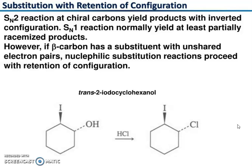SN2 reaction at chiral carbons yield products with inverted configurations. SN1 reactions normally yield at least partially racemized products. However, if a beta carbon has a substituent with an unshared electron pair or lone pair of electrons, nucleophilic substitution reaction proceeds with retention of configuration.